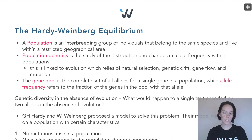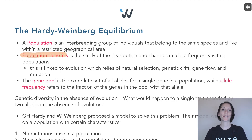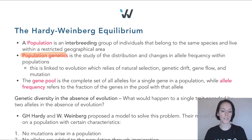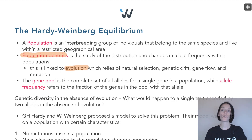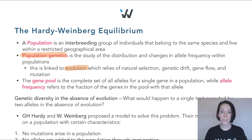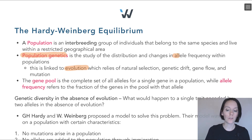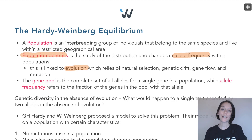Population genetics is the study of allele frequencies within a population and how they change over time. This is linked to evolution, which relies on natural selection, genetic drift, gene flow, and mutations — all leading to changes in allele frequency, which we can study using population genetics.